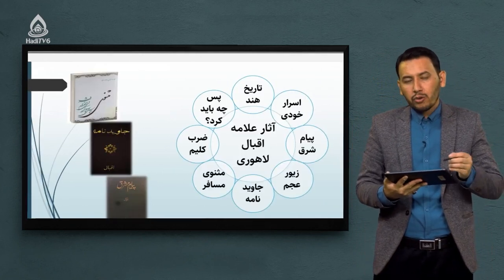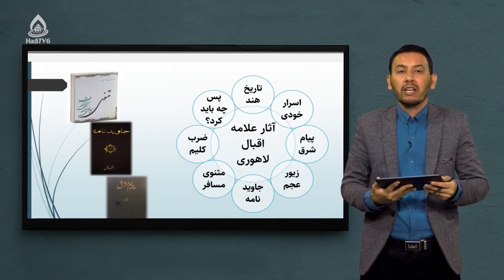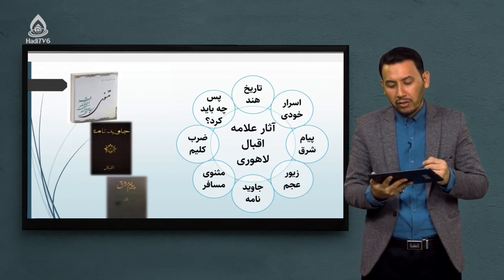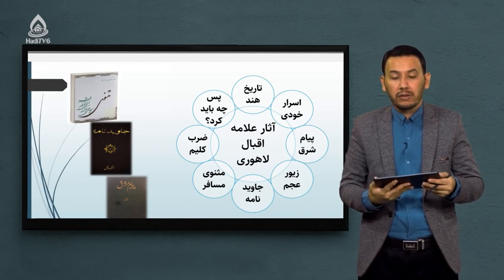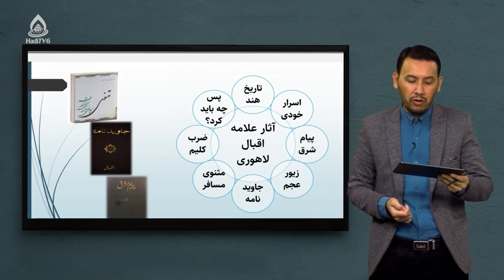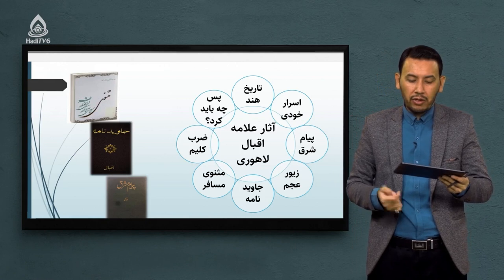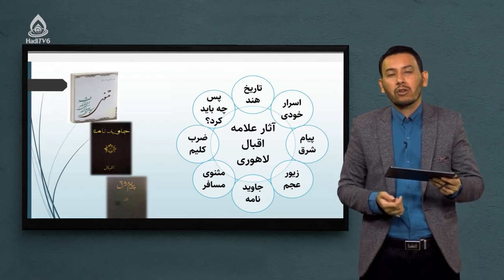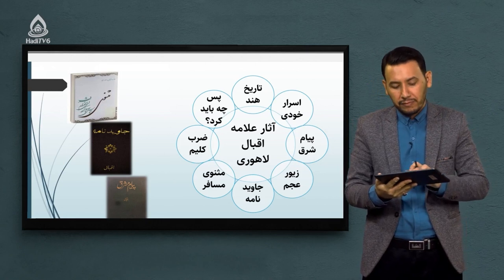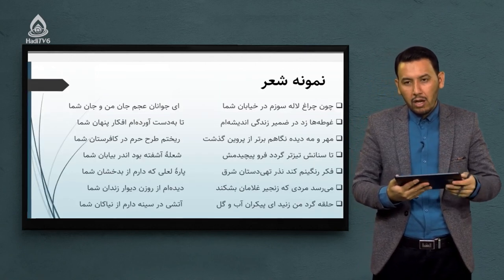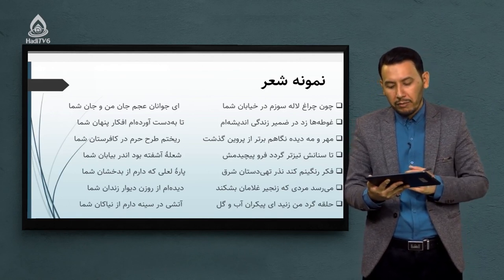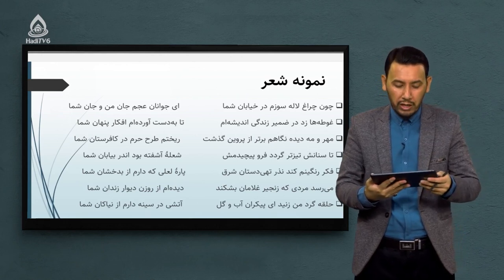در حوزه آثار علامه اقبال لاهوری این موارد را می‌توانیم نام ببریم: اولین اثر اشان «اسرار خودی» است که یک کتاب شعر بسیار زیباست. آثار دیگر: پیام شرق، زبور عجم، جاوید نامه، مسنوی مسافر، ضرب کلیم، پس چه باید کرد و تاریخ هند - از آثار مشهور اشان که هم در حوزه نثر و هم نظم قرار دارند.